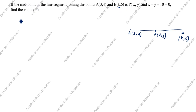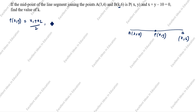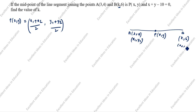So, what is the midpoint formula? P(x, y) is equal to x1 plus x2 divided by 2, comma y1 plus y2 divided by 2. Here, which one is x1 and which one is x2? This point is x1 comma y1.